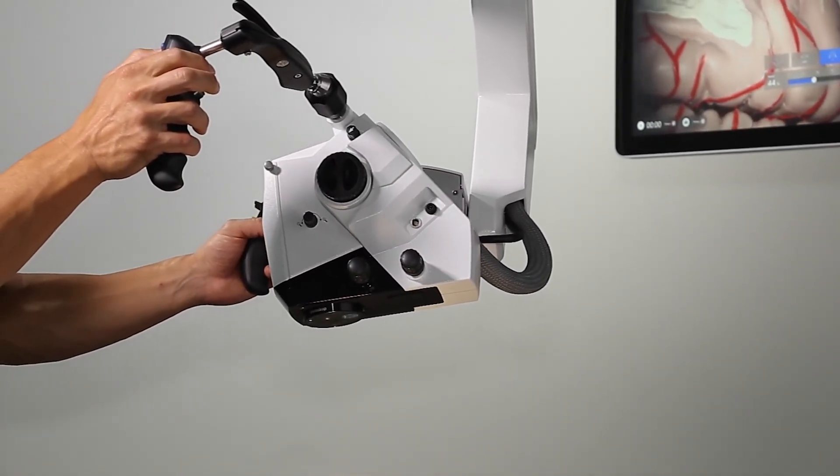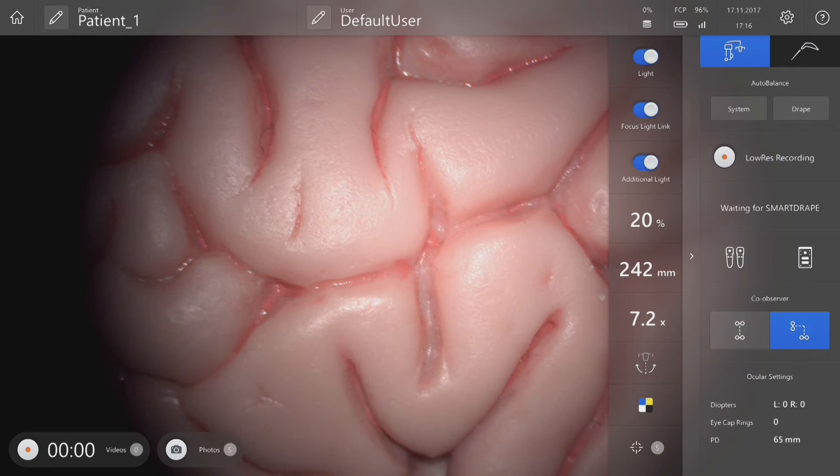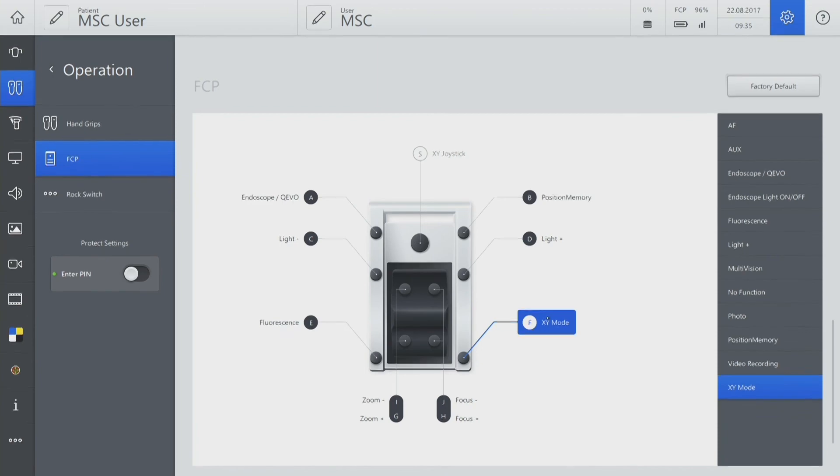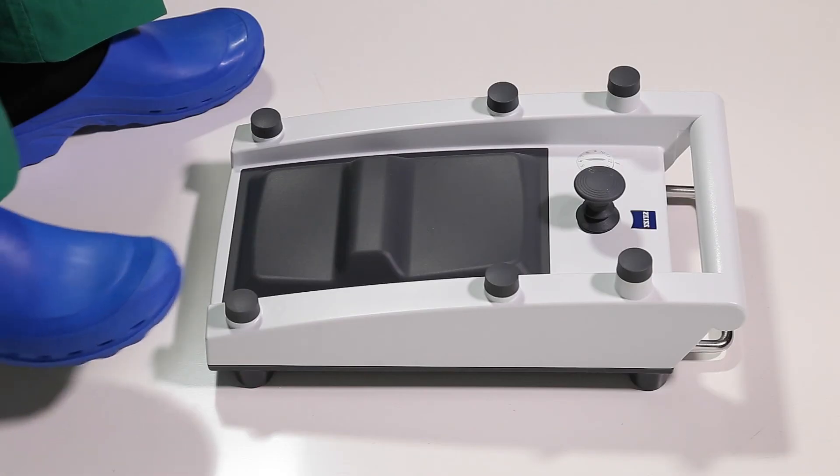To enable hands-free movement, configure the foot control panel for different motorized movements. Go to the icon from the main screen. Go to Adjust Settings. Configure XY mode to one of the buttons. Pressing this button enables toggling between different modes.